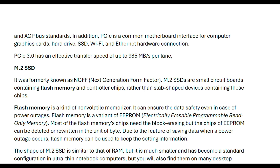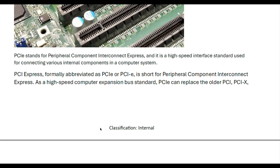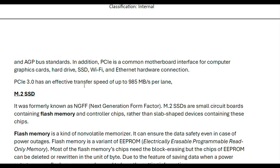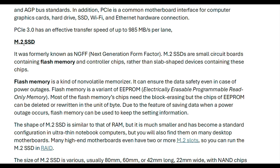PCIe 3.0 has an effective transfer speed of 985 MBps per lane. This is the PCIe slot — the normal speed is 985 MBps per lane.